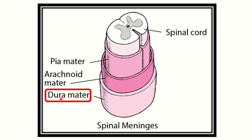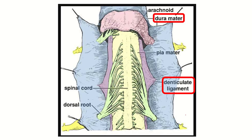From outside to inside: dura mater, then arachnoid mater, then pia mater. These three are called the spinal meninges. A useful mnemonic can be made here — DAP: D for dura mater, A for arachnoid mater, and P for pia mater.